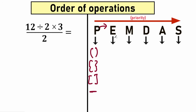After parentheses, the next step is E. E stands for exponents — the same thing as powers. For example, when we have 2 to the power of 3, or 5 to the power of 10. We're talking about these powers — they can be large. This is the second priority in our order of operations.